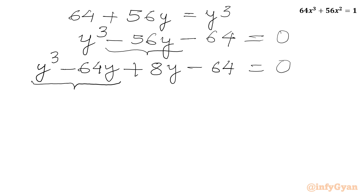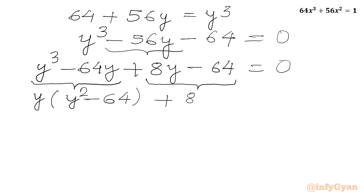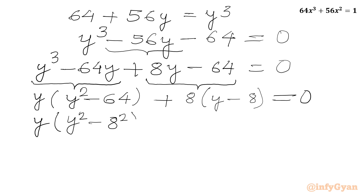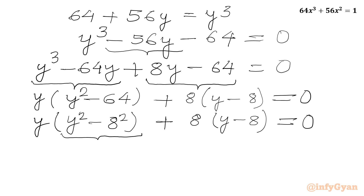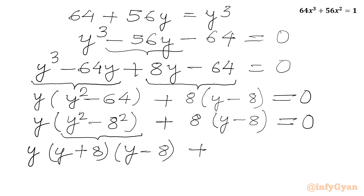From the first two terms we take y common, and from the last two terms we take 8 common: y(y² − 64) + 8(y − 8) = 0. We apply the difference of two squares formula: y(y + 8)(y − 8) + 8(y − 8) = 0.